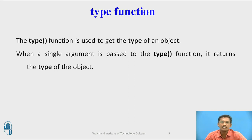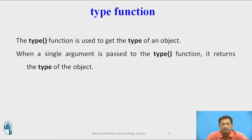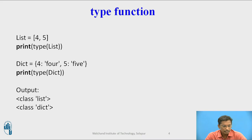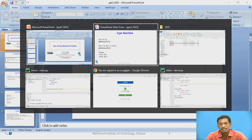The first function we will see is type. The type function is used to get the type of an object. When a single argument is passed to this type function, it returns the type of that object. We will see the example in PyCharm.